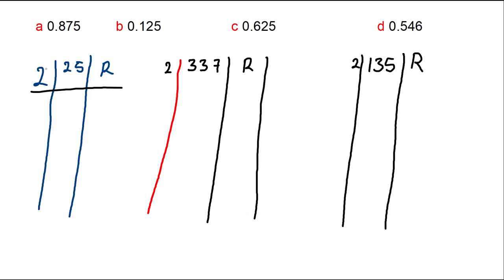Now we are going to convert 25 into binary using the successive division method. You continuously divide the number by 2 until you get your answer. 2 into 25 is 12 remainder 1. 2 into 12 is 6 remainder 0. 2 into 6 is 3 remainder 0. 2 into 3 is 1 remainder 1.